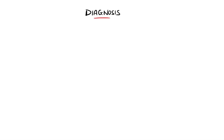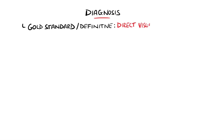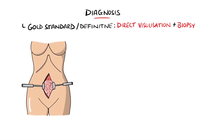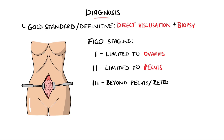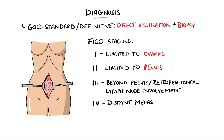The gold standard for definitive diagnosis comes from direct visualisation and biopsy, either done with a laparotomy or laparoscopy. FIGO is one of the most common staging systems used. In brief summary, this system divides the stages into four: the first is where the cancer is limited to the ovaries; the second is where the cancer is confined to the pelvis; third is where the cancer is found beyond the pelvis or in the retroperitoneal lymph nodes; and fourth is where there are distant metastases. Each of these have more specific subgroups indicated by A, B, or C.